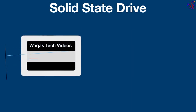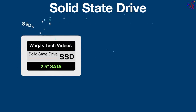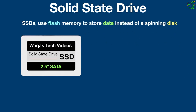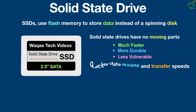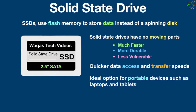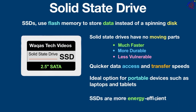The second type of storage device is the SSD, or solid-state drive. SSDs use flash memory to store data instead of a spinning disk. Solid-state drives have no moving parts, making them much faster, more durable, and less vulnerable to mechanical failure than hard drives. SSDs offer much quicker data access and transfer speeds than HDDs, and they are smaller and lighter, making them ideal for portable devices such as laptops and tablets. SSDs also consume less power, making them more energy efficient.